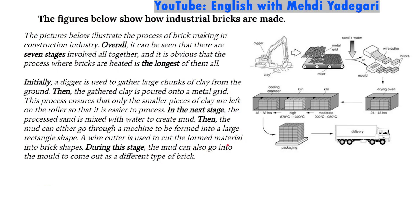Now we're in the main part. What do we need to do when given a process slash cycle? The first thing you need to know is that there are sequencers. Sequencers basically tell you where you are in the process — there are three separate locations: the very beginning, the middle, and the very end. We need to sequence what we're talking about. The bold words 'initially,' 'then,' 'in the next stage,' and 'during this stage' are all sequencers — words used to indicate which stage we're in and what comes next, so as not to confuse the reader.